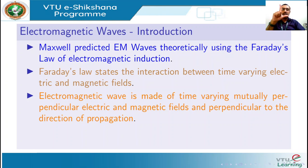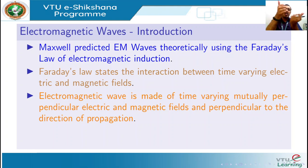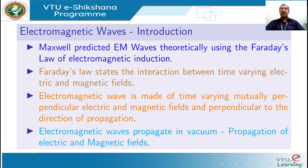If this is the direction of variation of the electric field, this will be the direction of variation of the magnetic field — they are mutually perpendicular. This variation propagates in space such that the direction of propagation is perpendicular to the plane containing electric and magnetic field vectors. The electric and magnetic fields are mutually perpendicular, and since it is the propagation of fields, electromagnetic waves do not require any material medium and can propagate through vacuum.